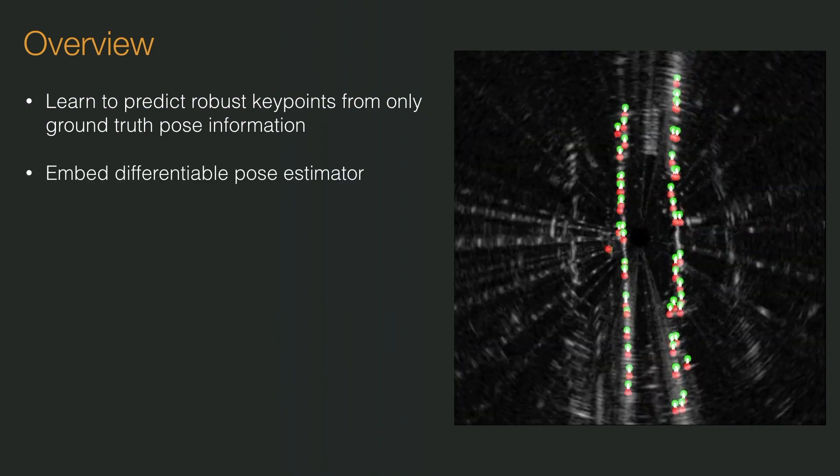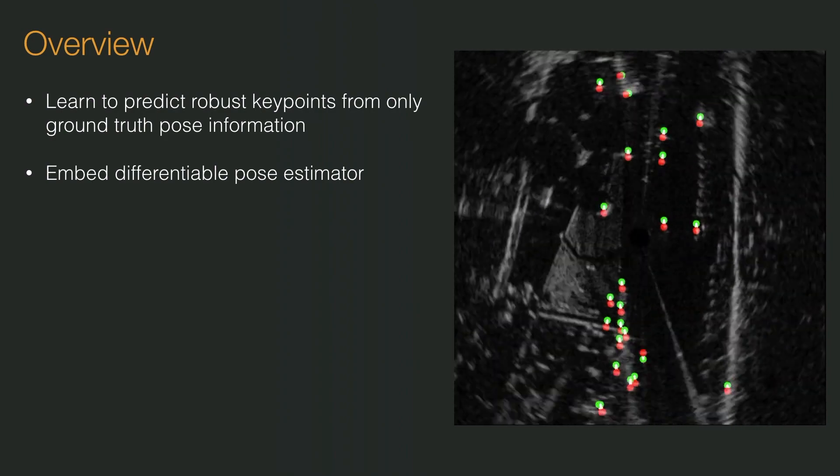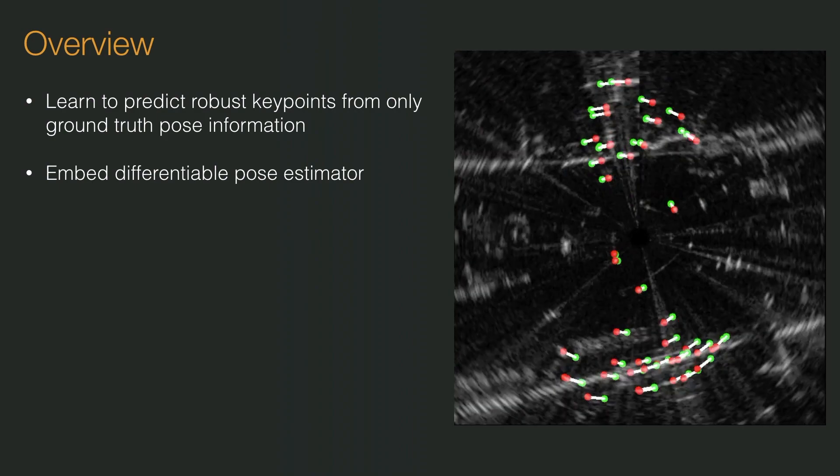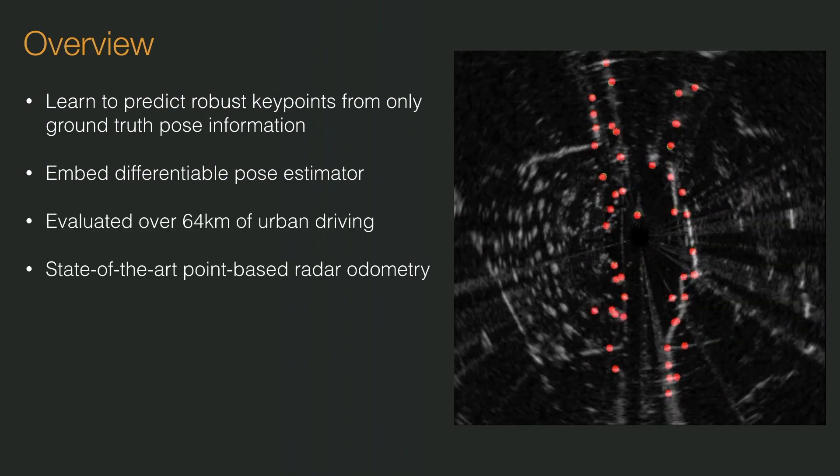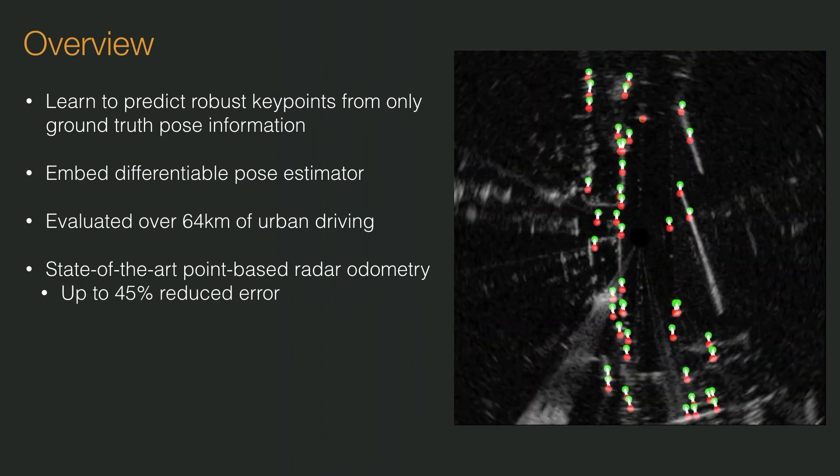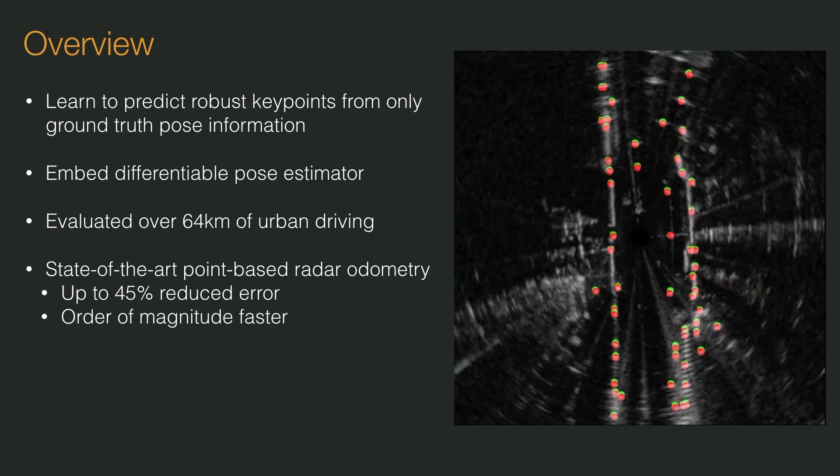By embedding a differentiable pose estimator inside our architecture, we learn keypoint location scores and descriptors from location error alone. Evaluated on real-world driving, we improve on the state-of-the-art in point-based radar odometry, reducing errors by up to 45% whilst running an order of magnitude faster.